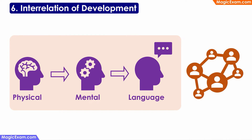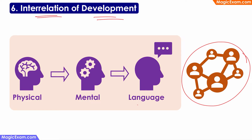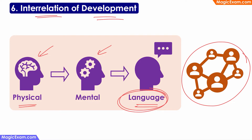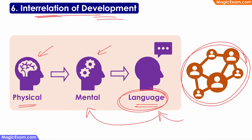Next is the principle of interrelation of development. This principle says that various types of development are interrelated. For example, the physical development of the child must happen first for the brain to develop. Only then will cognitive abilities develop, and only when the child is cognitively ready will language development happen. Language development must occur for the child to interact socially, enabling social development. Social interactions in turn further improve language, which then allows the child to absorb more information, advancing mental development. Therefore all these types of development are interrelated.